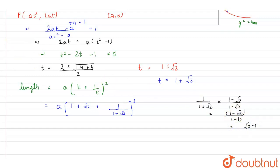So, using this value here, we get length equal to a into 1 plus root 2 plus root 2 minus 1 whole square. So, this gets cancelled out. So, this becomes a into 2 root 2 whole square.